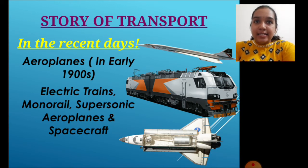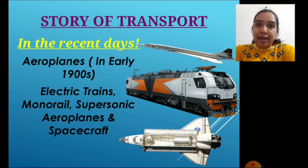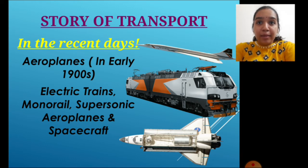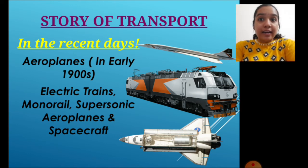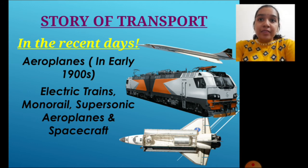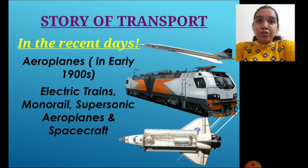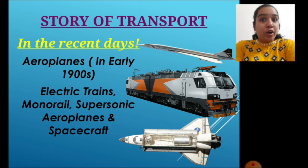In the early 1900s, aeroplanes were invented, which made traveling more convenient across longer distances from any part of the world. The most recent discoveries using high technology are electric trains, monorails, supersonic aeroplanes, and spacecrafts. These are the modern vehicles, and you can see the images here.